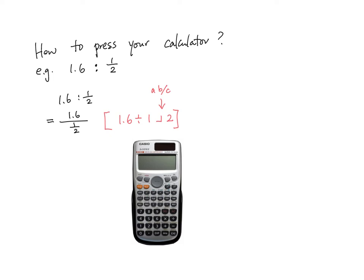The answer is 3.2. If you press exe the output would be 3.2. So how to change it back to the fraction, especially the improper fraction? I will press shift abc and then the output would be 16 over 5. So I can copy the answer back.